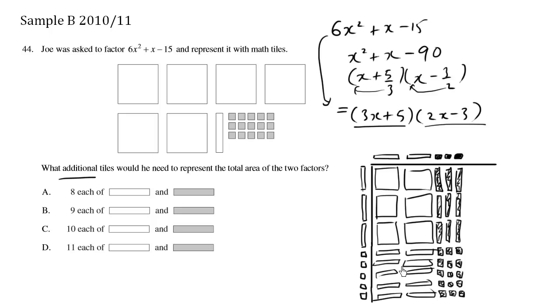So this here represents the total area, which is the product of these factors. And the question is a bit tricky because it's saying, what additional tiles would he need? Essentially, he needs all these tiles. But he already has these. What kind of pieces do we need to complete the set?